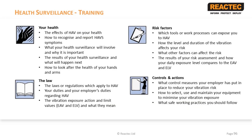This slide focuses on training. There are various ways you can provide employees with information on HAVs, such as booklets, webinars, toolbox talks, one-to-one discussions, and training sessions. Regardless of the method of delivery, there are certain things that an employer should make sure employees are informed about. Some may be general, such as what HAVs is and how it can affect them, and some may be more specific to their workplace, such as what measures have been taken to reduce their exposure to HAV. This slide provides a summary of the information or training you should provide.